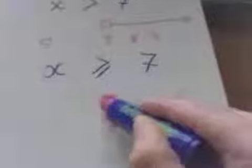Now, if it includes 7, it's the same idea. 7, 8, but this time if it includes 7, you shade it in.